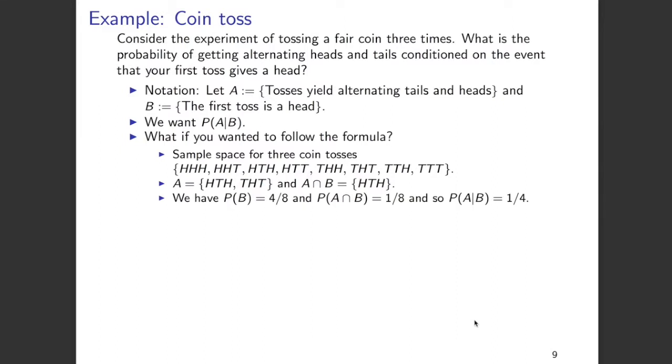Now let's find the probability of B. The probability of B is 4 out of 8. Recall that B is that the first toss is a head. The entire sample space has eight elements, and four of these have heads as the first coin toss: HHH, HHT, HTH, and HTT. So the probability of B is 4 divided by 8, which is half. Now what is the probability of A intersection B?